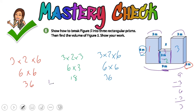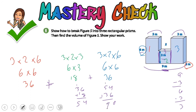Now we need to add them all together: 36 plus 18 — six plus eight is 14, carry the one, three plus one is four, four plus one is five — that's 54. Now 54 plus 36: four plus six is ten, carry the one, five plus three is eight, eight plus one is nine. So the entire volume is going to be 90 cubic meters.